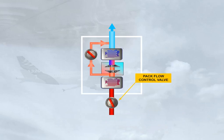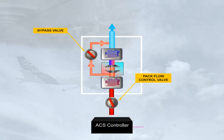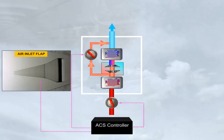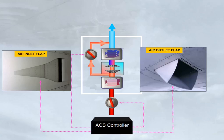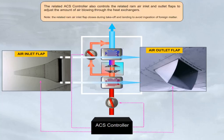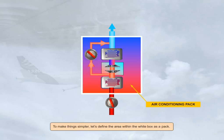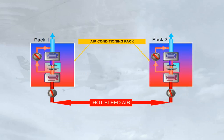The pack flow control valve and the bypass valve are regulated by a related air conditioning system controller to vary the flow rate and the output temperature. The related ACS controller also controls the related RAM air inlet and outlet flaps to adjust the amount of air blowing through the heat exchangers. Note: the related RAM air inlet flap closes during takeoff and landing to avoid ingestion of foreign matter. To make things simpler, let's define the area within the white box as a pack. The two air conditioning packs operate automatically and independently to provide cool conditioned air.